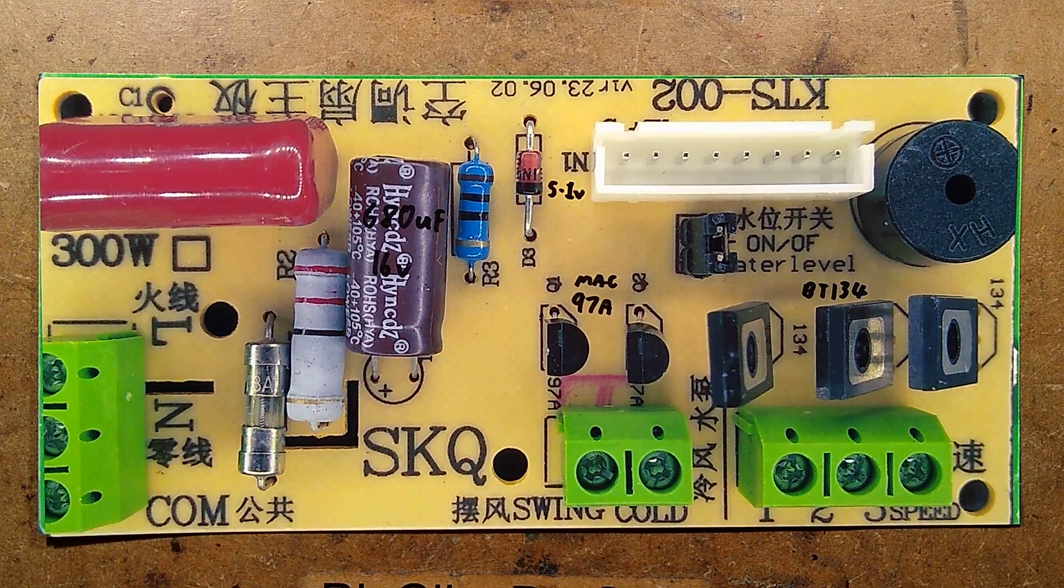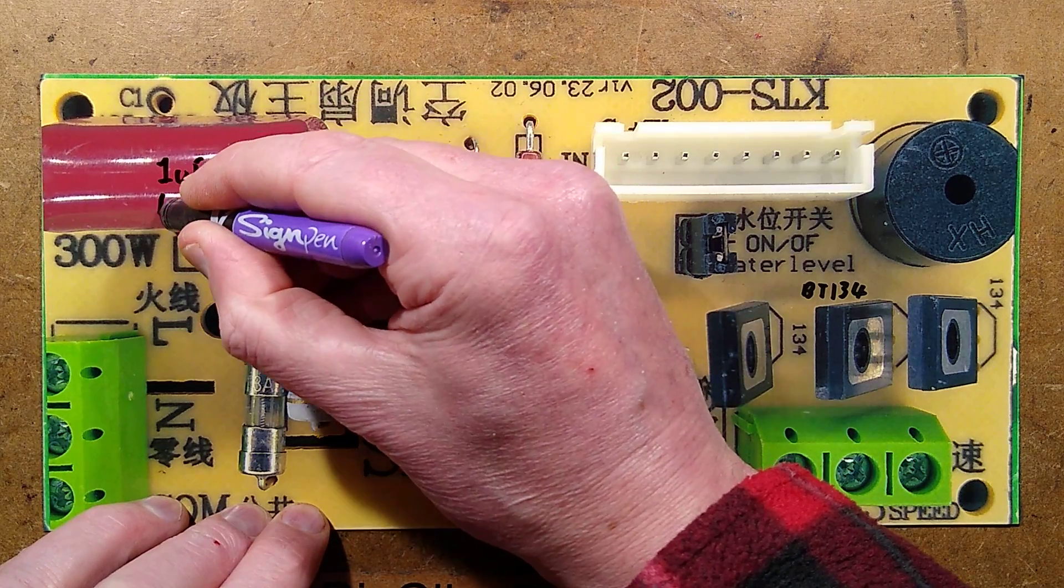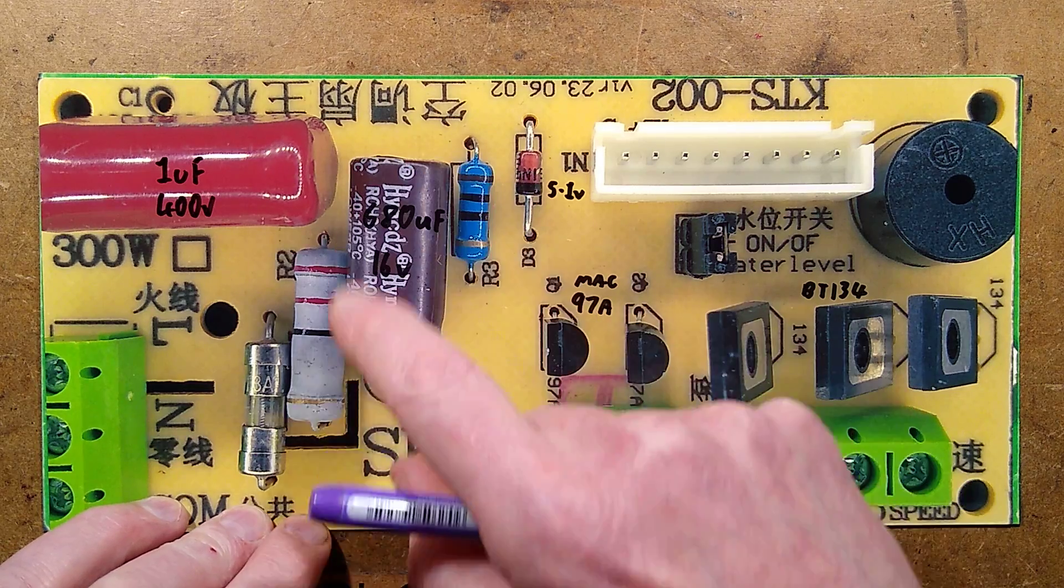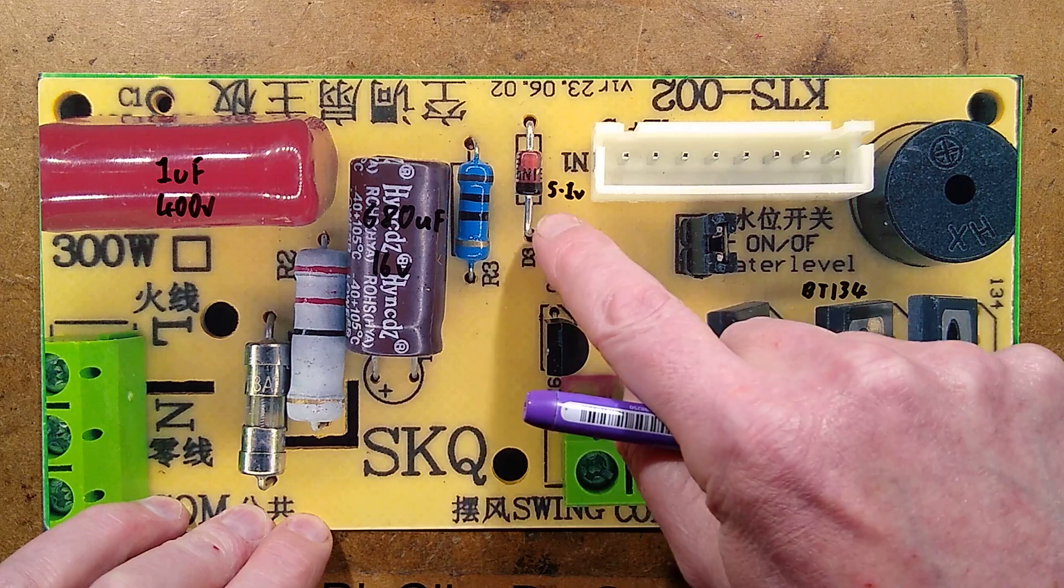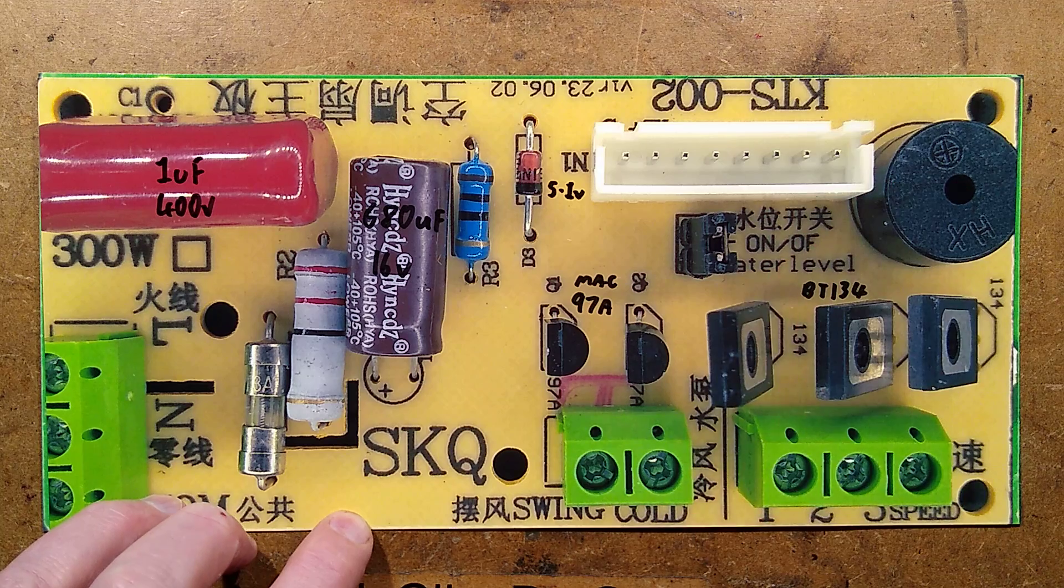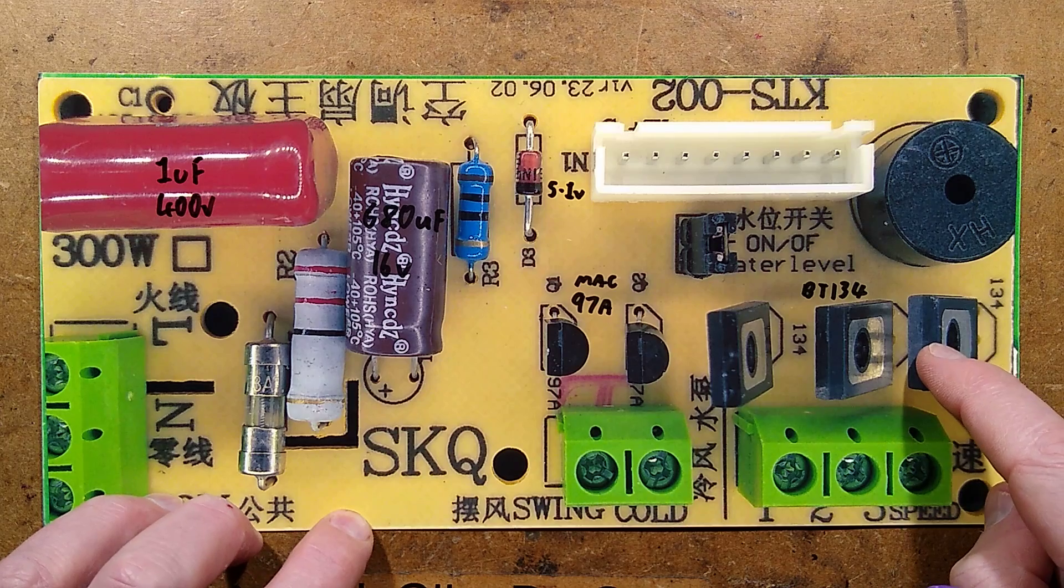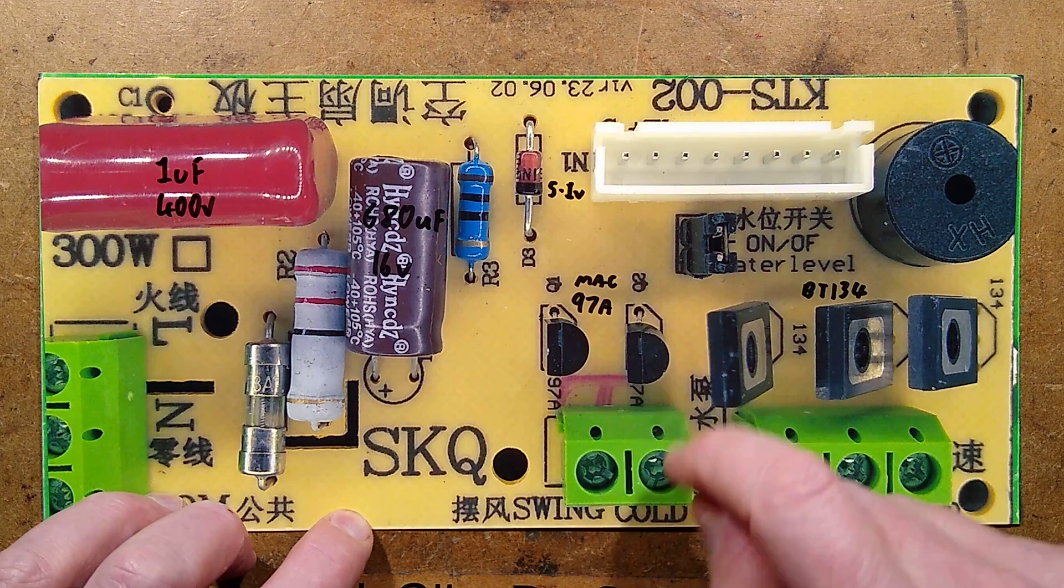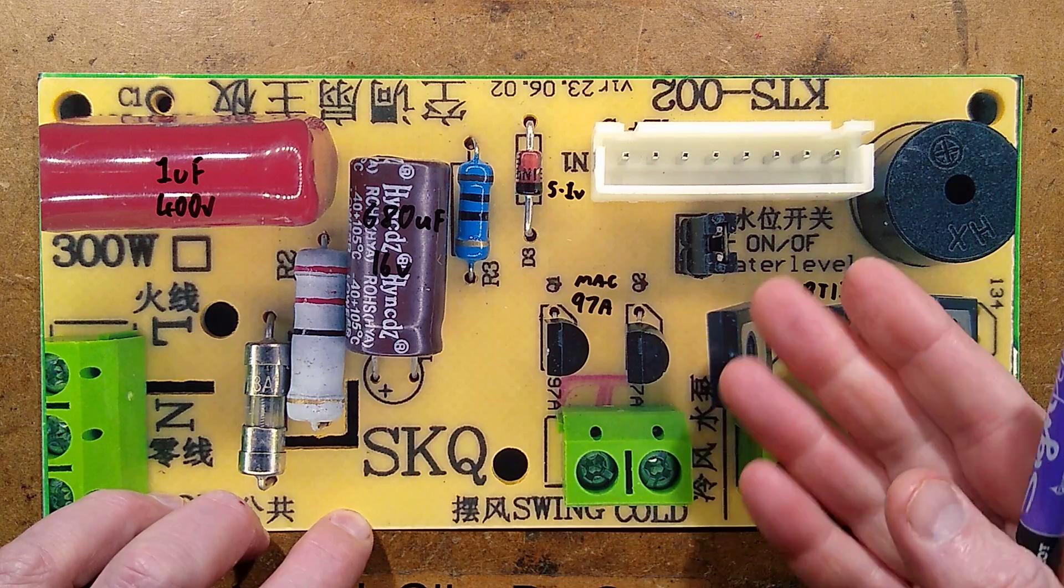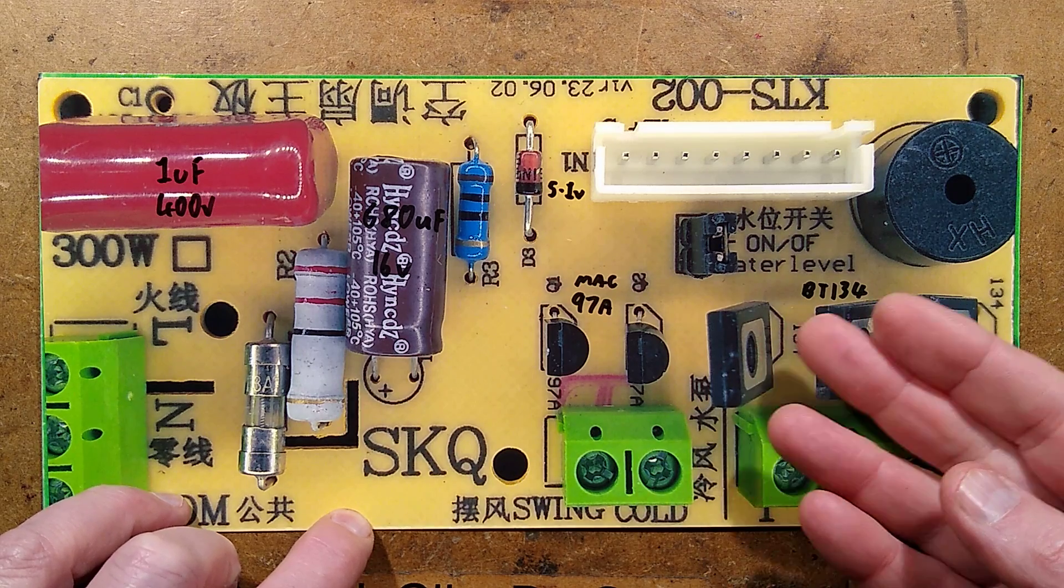This is the main power card. It has a capacitor that is one microfarad 400 volt and creates a 5 volt supply courtesy of various resistors, smoothing capacitor, decoupling capacitors, and diodes in the back, and then a 5.1 volt zener. That supply then goes up this connector to the remote module and controls five triacs - three for the motor (low, medium, high) and a couple of small ones for the swing and cold, which runs the pump for the evaporative cooling effect.